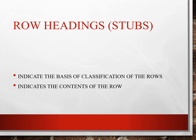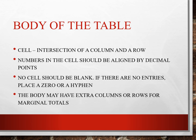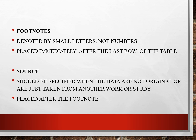Row headings indicate the basis of classification of the rows and indicate the contents of the row. The body of the table would have cells, which are the intersection of a column and a row. Numbers in the cell should be aligned by decimal points. No cell should be left blank — if there are no entries, place a zero or a hyphen. The body may have extra columns or rows for marginal totals. Footnotes are denoted by small letters, not numbers, and placed immediately after the last row of the table. Your source should be specified when the data are not original or taken from another work, and it's placed after the footnote.